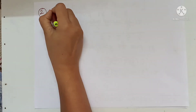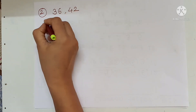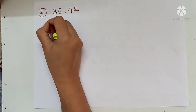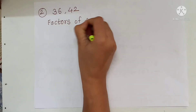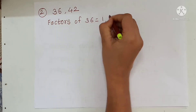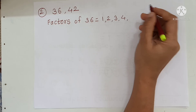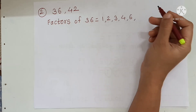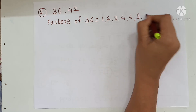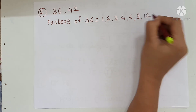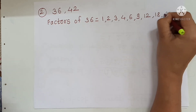Now second example: 36 and 42. First of all we have to write factors of 36: 1, 2, 3, 4, 6, 9, then 12, 18, and 36.